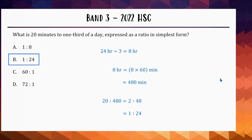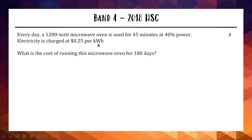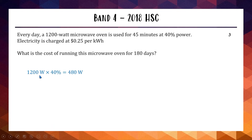Stepping up to Band 4. This one's from the 2018 HSC involving power consumption. We've got a 1200-watt microwave used for 45 minutes at 40% power, costing 25 cents per kilowatt hour. We need to find the cost of running it for 180 days. A slight trick: the microwave only uses 40% power, so we're not using 1200 watts — we're using 40% of 1200, which is 480 watts.